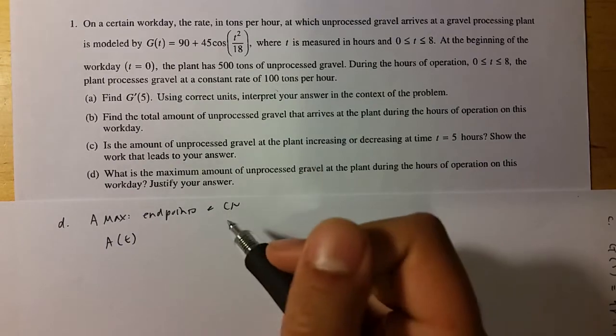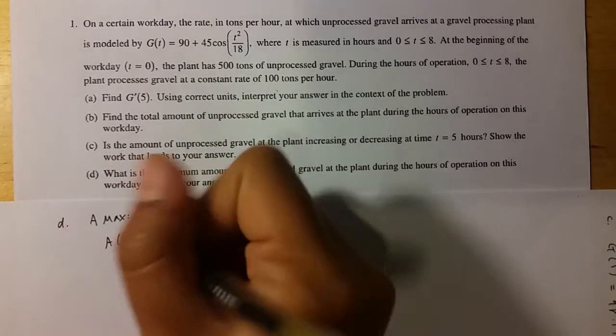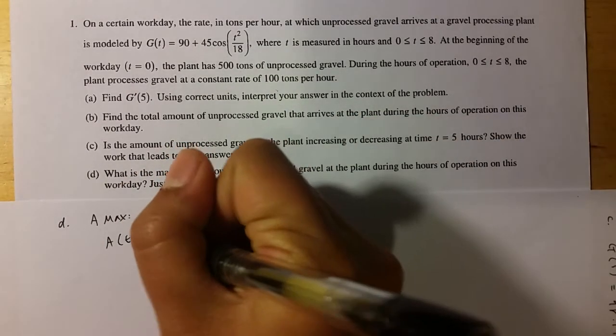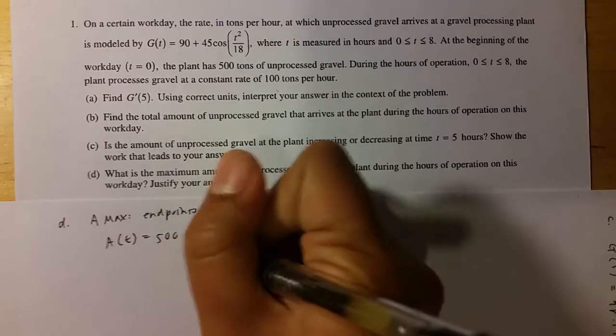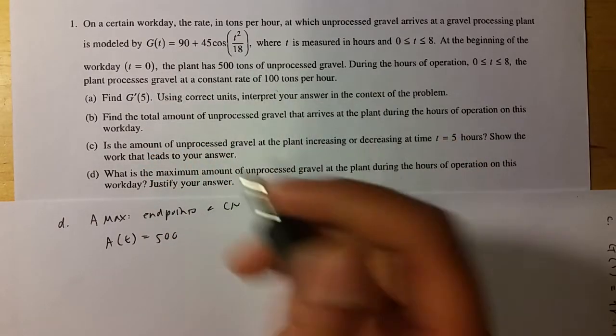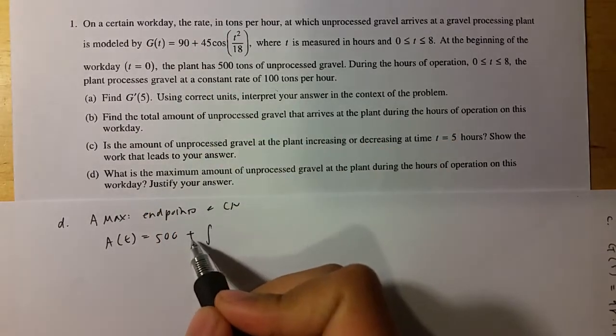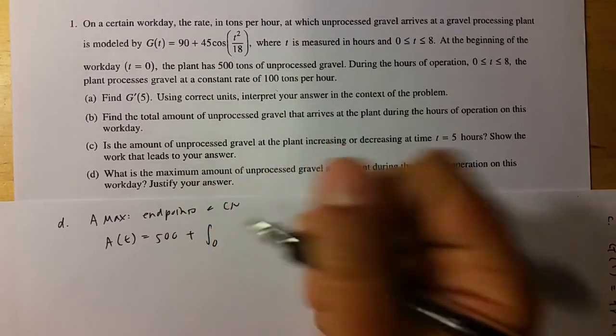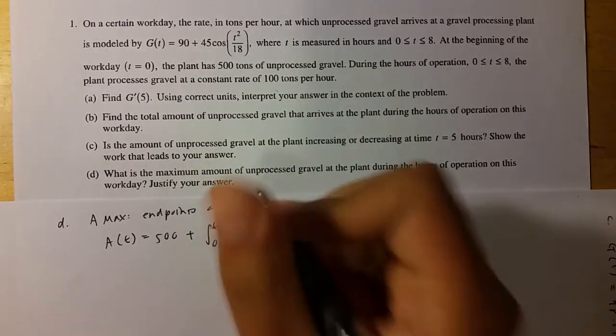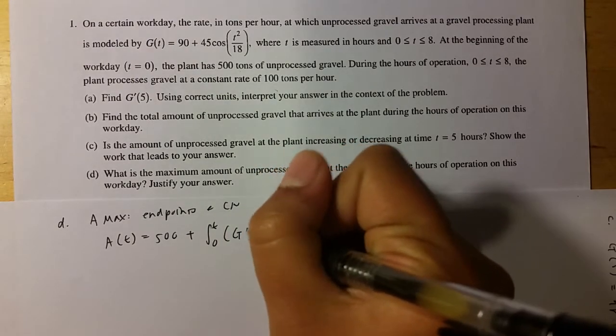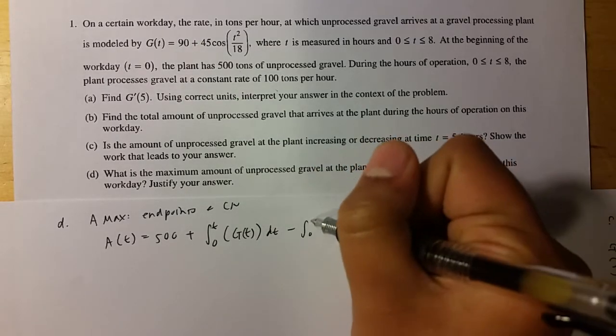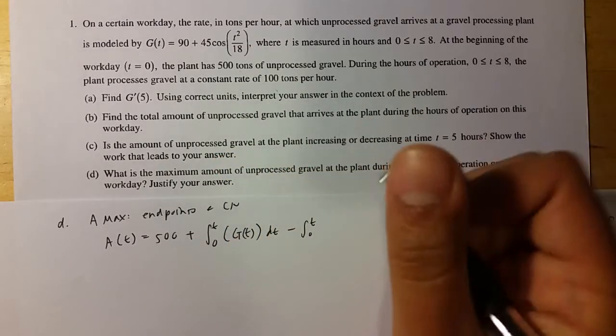So let's just call that A of T. And you'll find that A of T because... Let's just try and work this out. If the plant starts with 500 tons, that's like an initial value. So it's your constant that you add on. So you can start with 500. And after that, you know that it's coming in at this rate, right? So you can do an integral plus the integral because it's coming in. So you add it, from zero, right? Because that's when it starts. But until when? Until T because it's a function of T. You don't know what. And then, you do G of T.